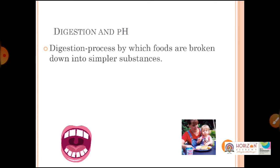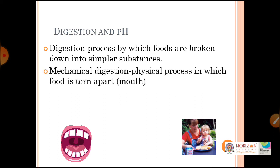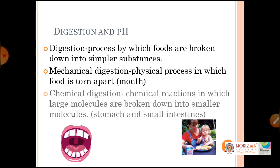Digestion is the process of breaking down food into simpler substances. Mechanical digestion is the physical process in the mouth where food is broken into small parts by chewing. Chemical digestion occurs in our stomach and small intestine, where food is broken into very small molecules that can be absorbed into the bloodstream through the small intestine.